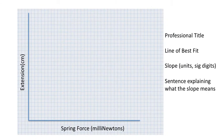So this is the graph I'd like you to complete today. We're going to plot spring force on the x-axis. That's because that was the variable that we were in control of. And we're going to plot extension on the y-axis in centimeters. It's plot on the y-axis because this is the variable that we were measuring. What are my expectations? I want a professional title. Please just don't simply write y versus x. I want you to draw a line of best fit. I want you to calculate the slope of that line of best fit. Include the units and significant digits. Then I want a sentence explaining what the slope actually means.